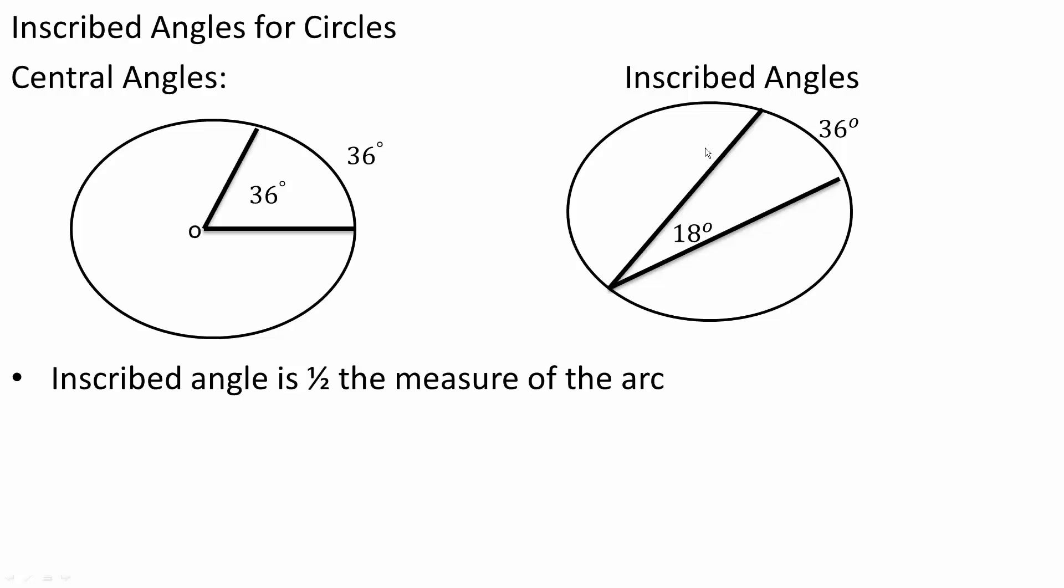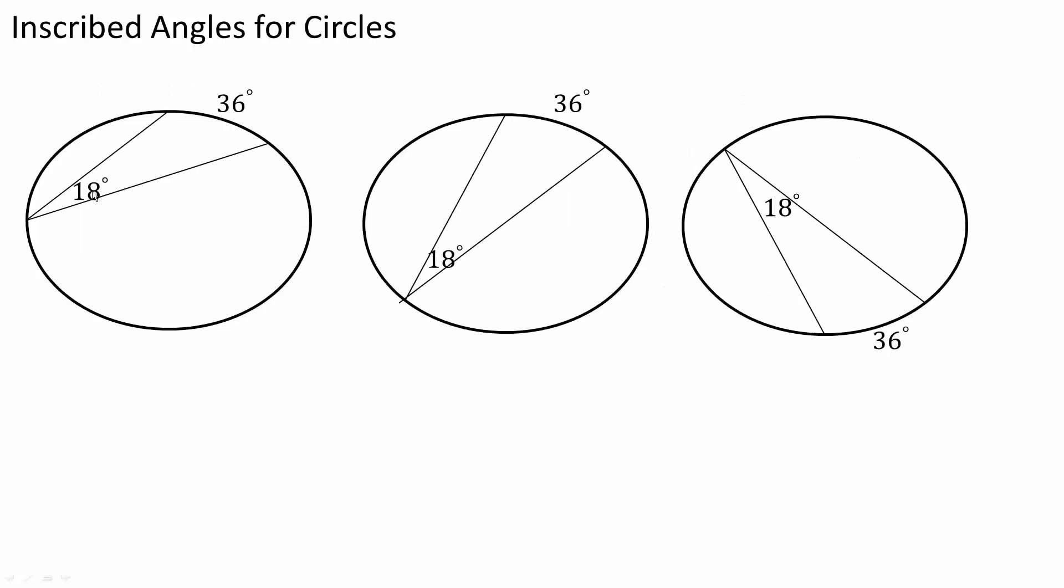Now an inscribed angle is different. The inscribed angle will be half the measure of the arc. So if this arc is 36 degrees, then the inscribed angle will be half of it, 18 degrees. The inscribed angle is 18. It could look like this, it could look like this. Infinite possibility.